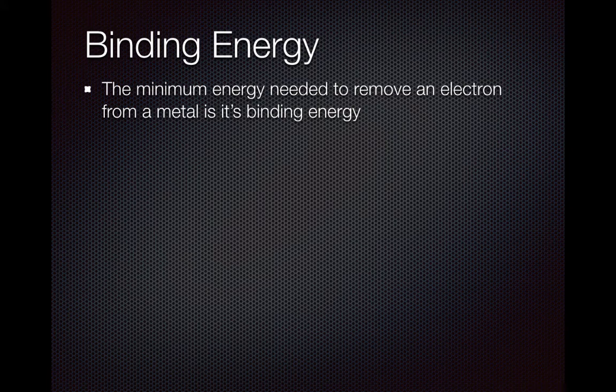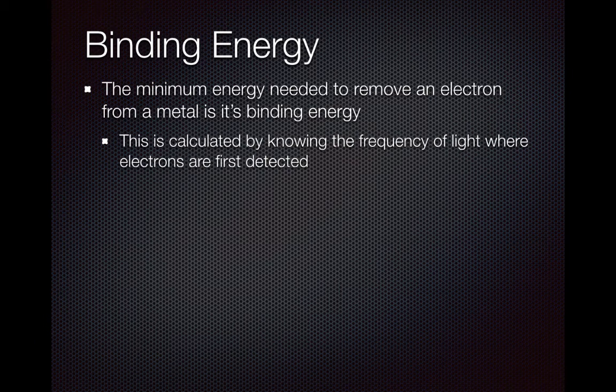If we look at the binding energy of a material, this is the minimum energy needed to remove an electron from a sample of that metal. This is calculated by knowing the frequency of light where electrons are first detected. So if we know the frequency of light where electrons first get ejected, that's the energy required to move those electrons off of the metal.